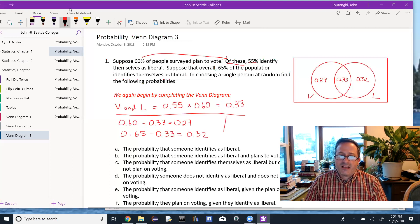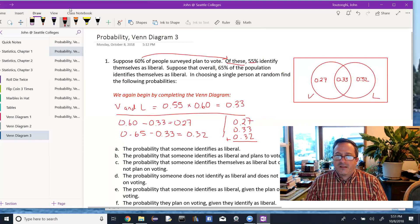Now we still need to figure out who's left. So again, we can add the three regions up. So 27 plus 33 plus that 32. And that's 65, 72, 82, 92. So that means there's 8% outside of either circle. I'll put those people up here.